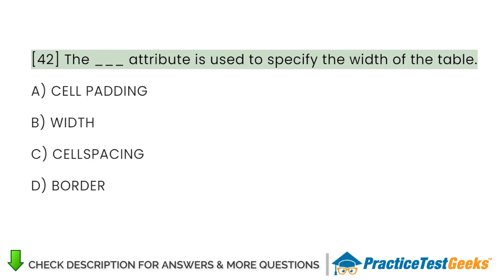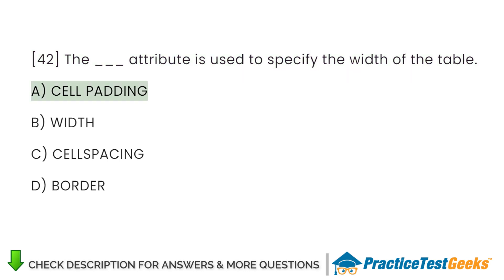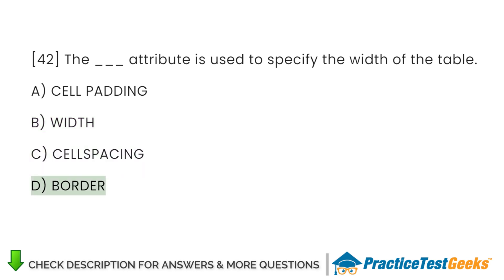Which attribute is used to specify the width of a table? A. Cell padding. B. Width. C. Cell spacing. D. Border.